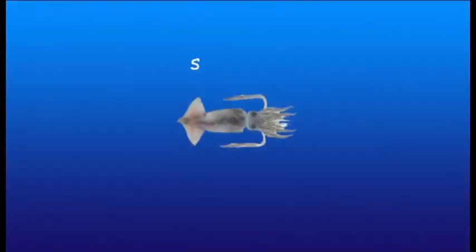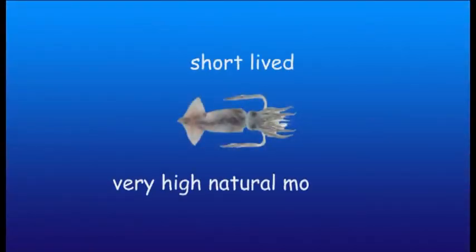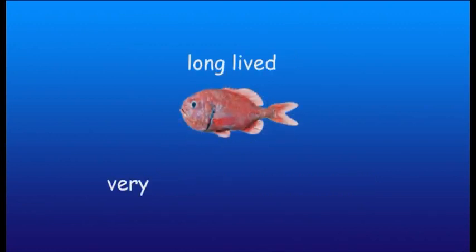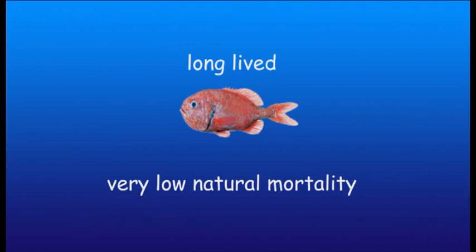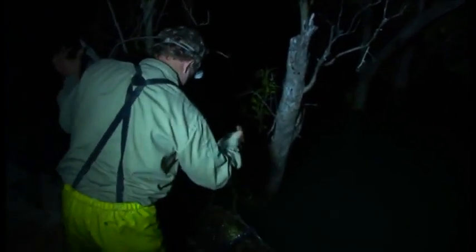Typically all of these things are very hard to measure out in the ocean, but luckily there are some general relationships between how old animals get and their natural mortality rates. Scientists often represent natural mortality by just using the letter M, and estimate it based on how long the fish live.